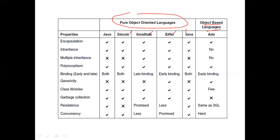Java supports encapsulation, inheritance — including multiple inheritance as one type — polymorphism, and both early binding and late binding. Java does not support genericity, which is available in C++. Live classes are supported, and garbage collection makes software stable. When this language develops software, it is stable. There is also concurrency support in Java.